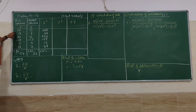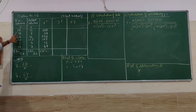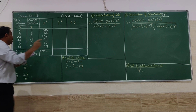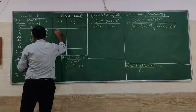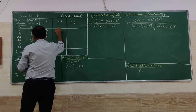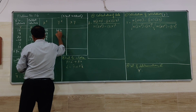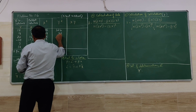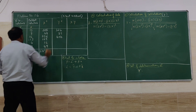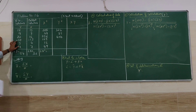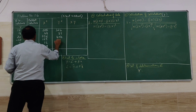Next we go for y squared: 18×18, 9×9, 19×19, and so on. Then 20×20 = 400, and minus 10 × minus 10 becomes plus 100.